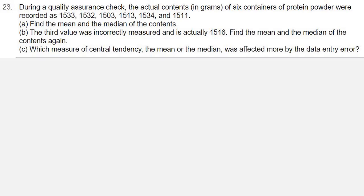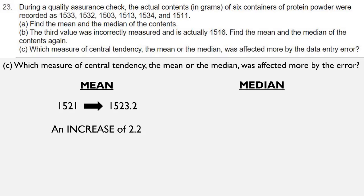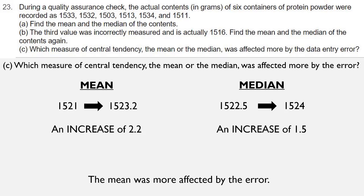In part C, we're asked which measure of central tendency, the mean or the median, was affected more by this error. So for the mean, we started with a value of 1521, and it changed to 1523.2. That's an increase of 2.2. For the median, we started with a value of 1522.5, and that changed to 1524. That's an increase of 1.5. So which one was affected more? The mean was affected more by the error, because it increased by slightly more than the median did. And that's your answer.